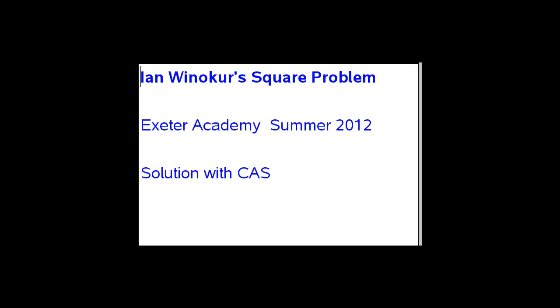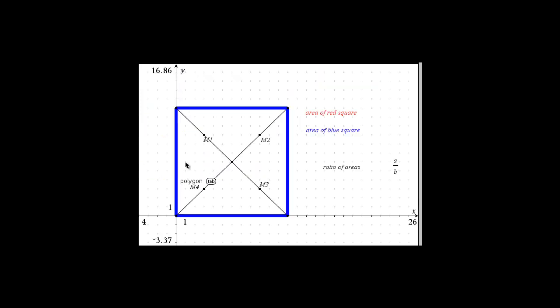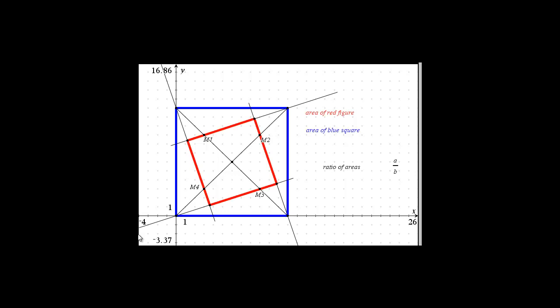The last example to illustrate how to use CAS is from Extra Academy. Ian Winokur gave me this problem. Here we have a square with the diagonals drawn and we put in what I call the midpoints of the half diagonals, and then we connect vertices to those midpoints. We create a figure here, this red figure, and we want to know what is that figure and what is the ratio of the area of the red figure to the area of the blue square. That's the problem.